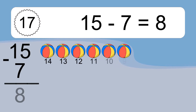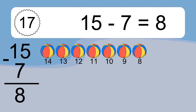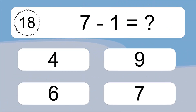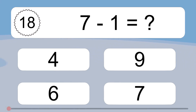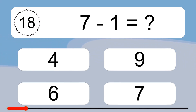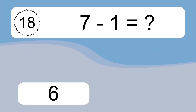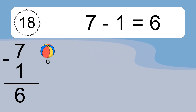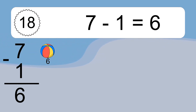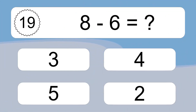15 minus 7 equals what? 15 minus 7 equals 8. Let's count it. 14, 13, 12, 11, 10, 9, 8. 7 minus 1 equals what? 7 minus 1 equals 6. Let's count it. 6.